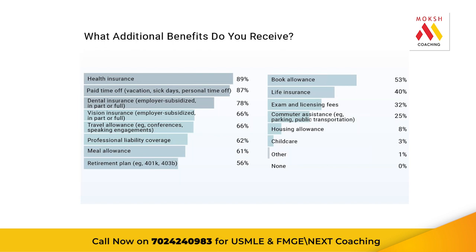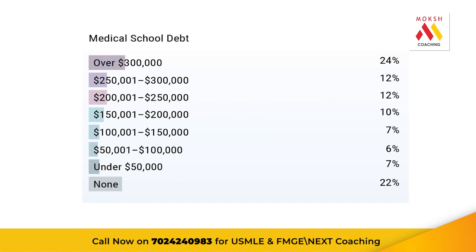Housing allowance: certain programs actually pay for your housing, which cuts that cost significantly. Childcare is another benefit — if you have a child during residency, check if your program covers that. Residency is essentially a job under supervision. In terms of medical school debt, most medical students will be over three hundred thousand dollars in debt, which is why the higher attending salary afterward is important to pay it off.